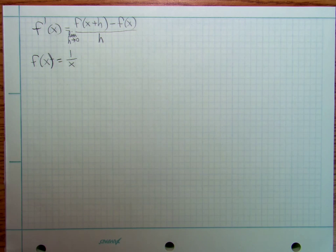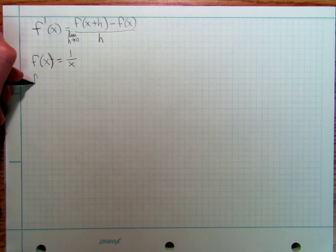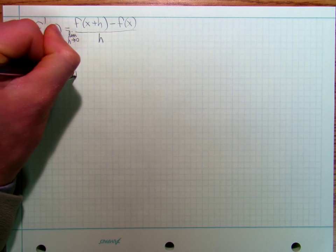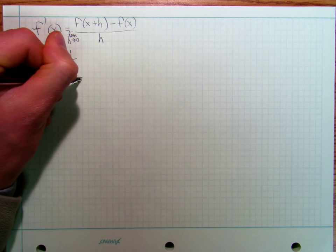The limit as h approaches zero. And so now the function that I'm going to use is 1 over x. So then I've got f of x plus h is going to be equal to 1 over x plus h.